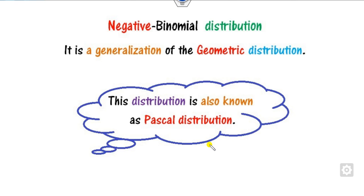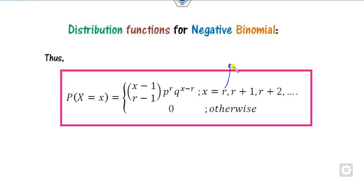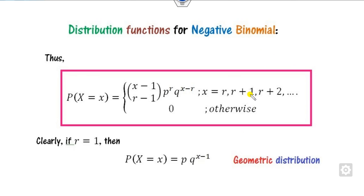The negative binomial distribution is also called the Pascal distribution, or it is the generalization of the geometric distribution. We already discussed the geometric distribution — you can see that in the link here. The PMF of the negative binomial distribution is defined such that you get the r-th success at the x-th trial, and in the remaining x minus r trials you get r minus 1 successes. Here r is the number of successes needed. Clearly, if r is 1, we perform the experiment until the first success appears — that distribution is called the geometric distribution. So when r equals 1, this distribution becomes the geometric distribution.